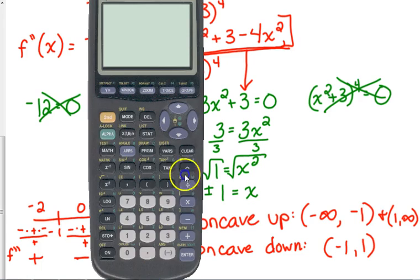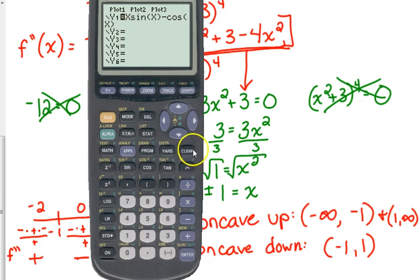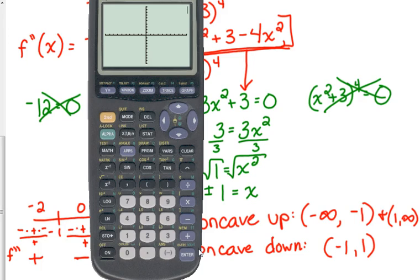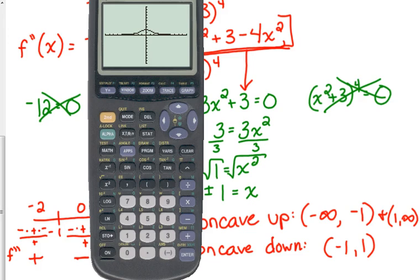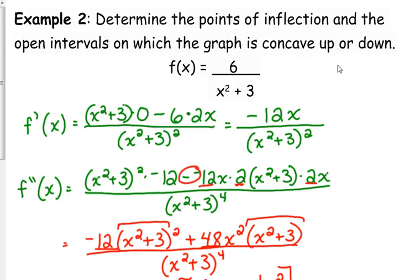I'd really like to know what this whole thing looks like — 6 over x squared plus 3. I'm going to graph it so we get a visual. This is not our typical rational function. We're used to rational functions having asymptotes, but the denominator x squared plus 3 is never going to equal 0, so we don't have any asymptotes or holes since we can't factor anything out.